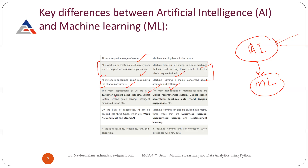The main applications of AI are Siri, customer support using chatbots, expert systems, online game playing, and humanoid robots. The applications of machine learning are online recommender systems — like Facebook recommending friends, Google search, and Facebook auto friend tagging, which tags your friends' faces and gives you hints. Based on capabilities, AI is divided into three categories: weak AI, general AI, and strong AI. Machine learning is broadly categorized into supervised learning, unsupervised learning, and reinforcement learning.